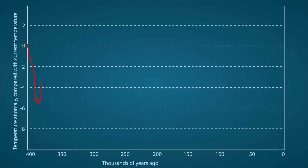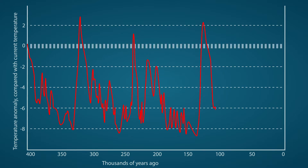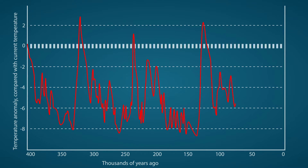Let's start with the temperature change from the last 400,000 years to the present. The line shows the temperature compared to the current temperature. Much of this line is below the current average temperature, meaning that during this period it was on average much cooler than today — up to about 8 degrees cooler.